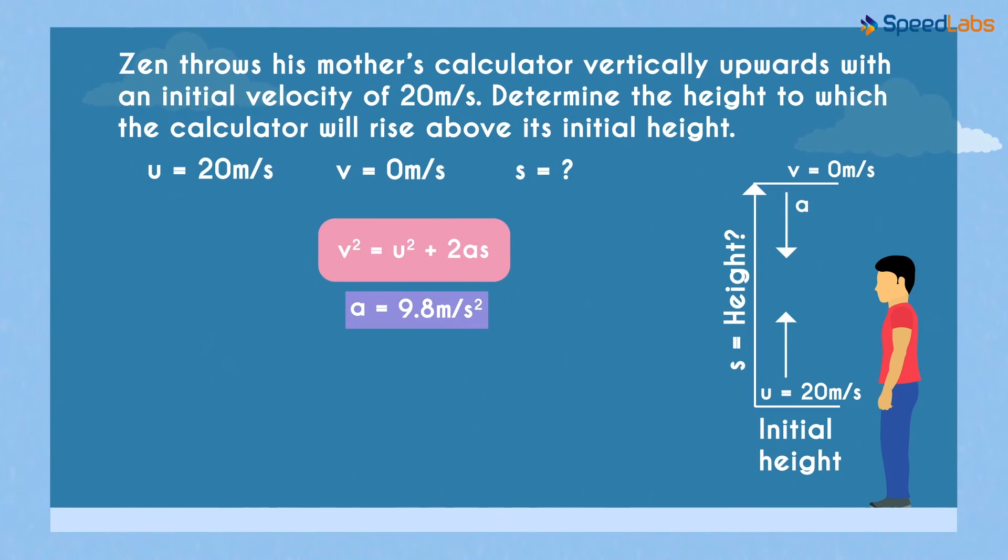So here, the sign of the acceleration will be opposite to that of the velocity. As we assume the velocity u to be 20 meters per second, the acceleration A here will be negative 9.8 meters per second squared.